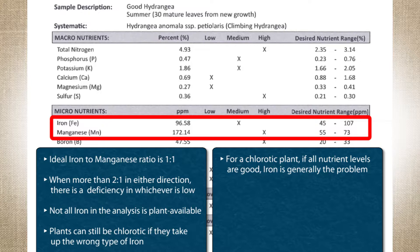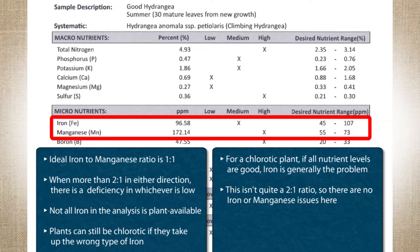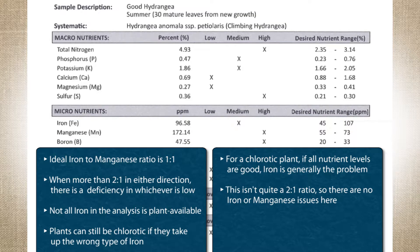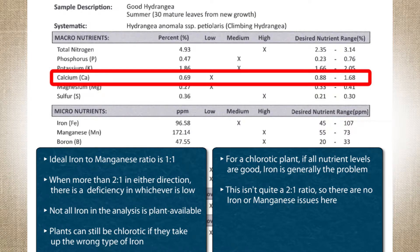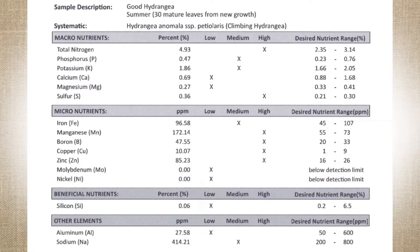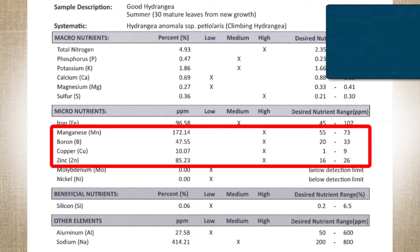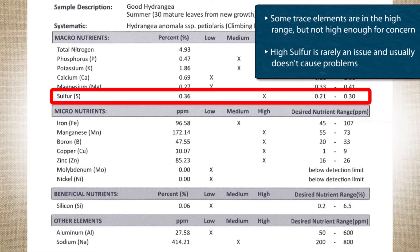I like to see about a 1 to 1 ratio of manganese to iron in the leaf tissue. In this good hydrangea, manganese is 172 and iron is 96 — that's not quite 2 to 1. The plants are fine; there are no iron or manganese issues here. The main thing these plants need is additional calcium, and I would be recommending some foliar calcium. Harrell's has a really good glucoheptanate calcium source, or you could use a CalMag chelate, which would have both calcium and magnesium. A few trace elements are slightly into the high range but not high enough to be concerned about. High sulfur is almost never an issue; elevated sulfur in plant tissue really doesn't cause problems most of the time.